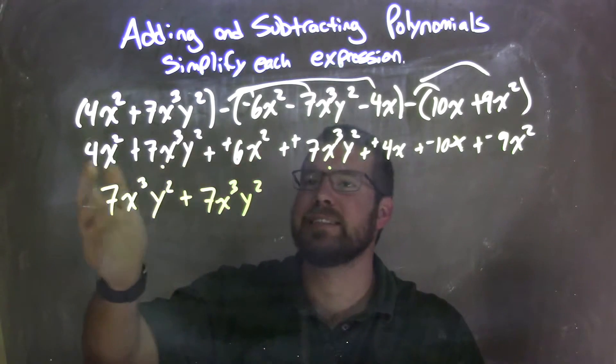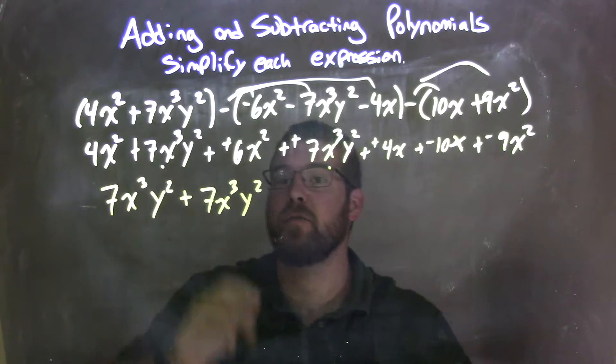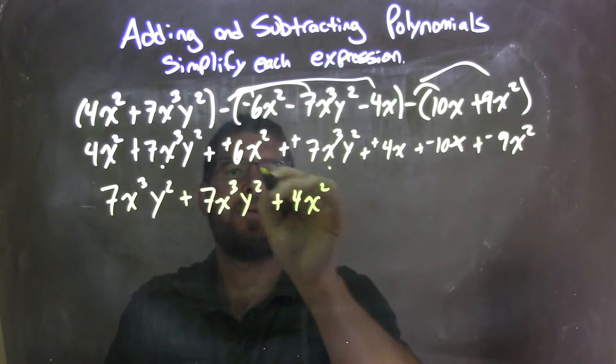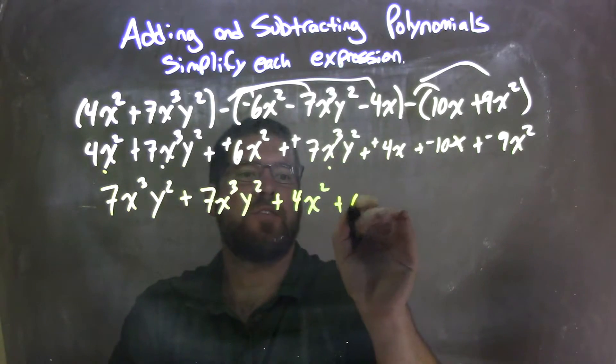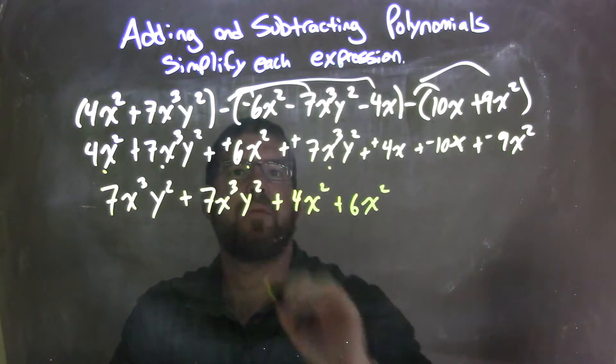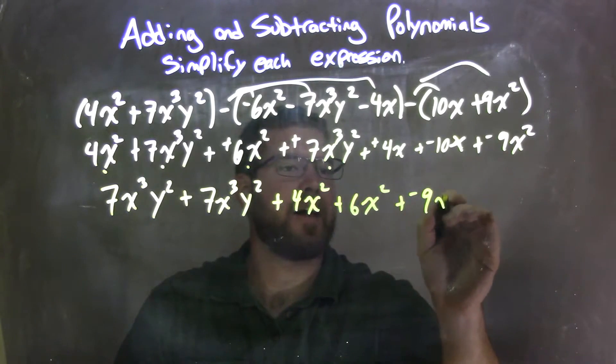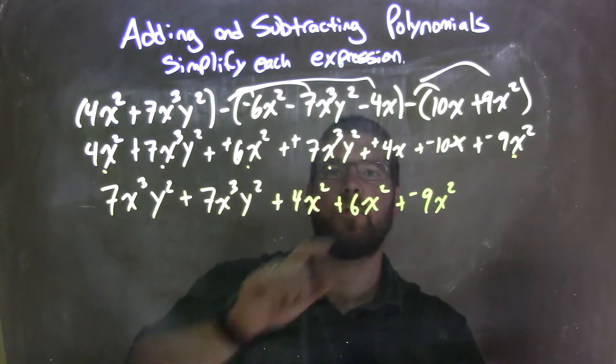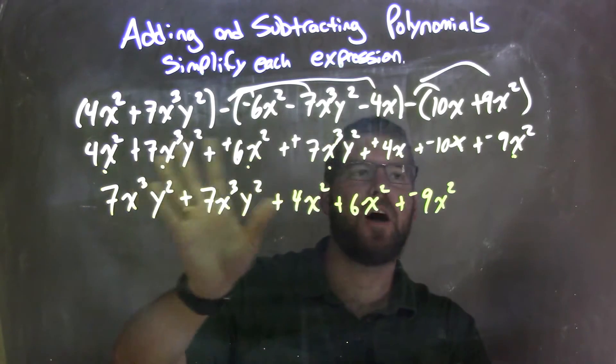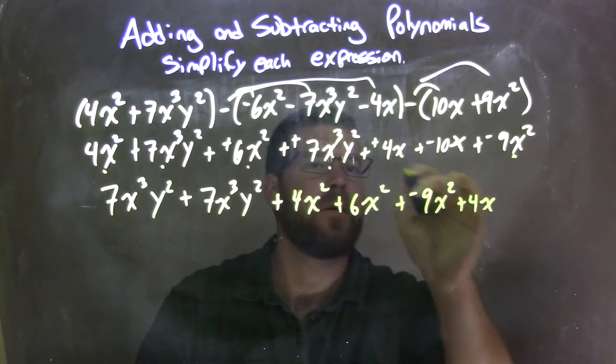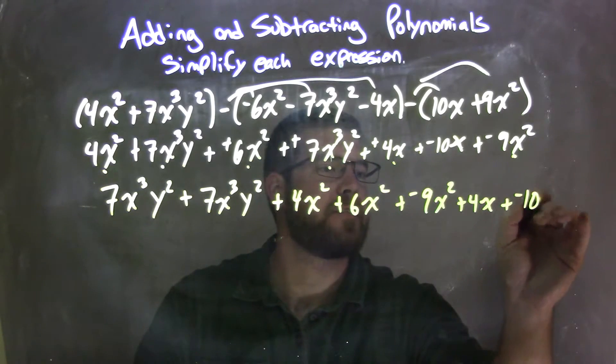Then, the next highest degree I see is x squareds. I see plus 4x squared there, the dot brought it down, plus 6x squared right there. Then I have a negative 9x squared, plus a negative 9x squared. Then from there, I don't see any other like terms of squareds, so I've got x's. I have 4x, plus a 4x, and plus a negative 10x.